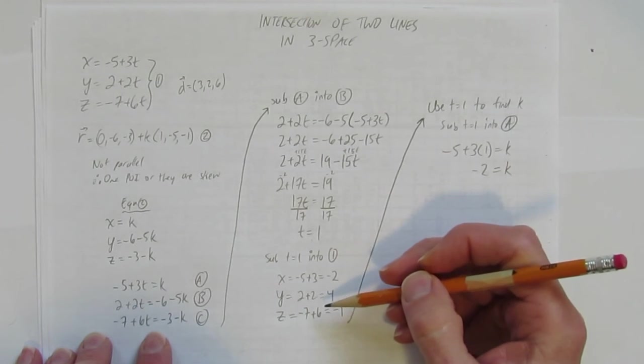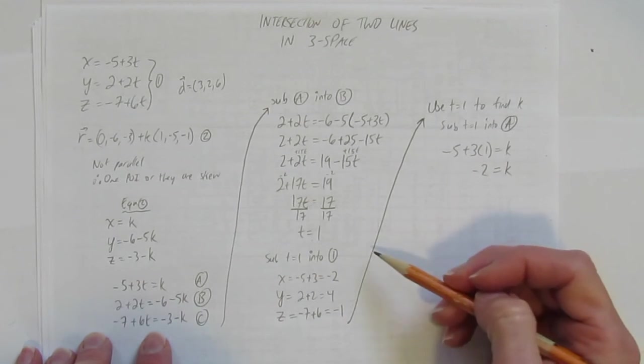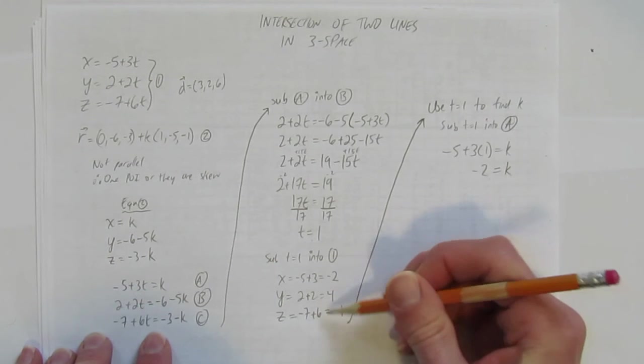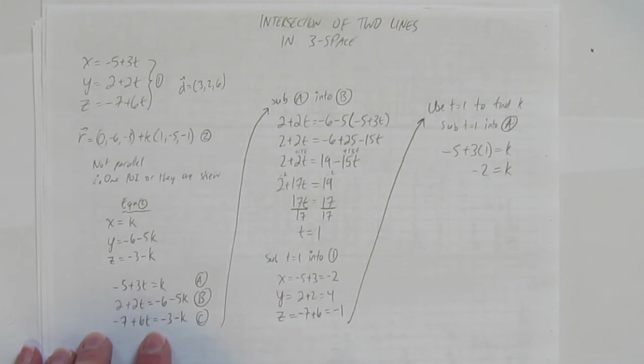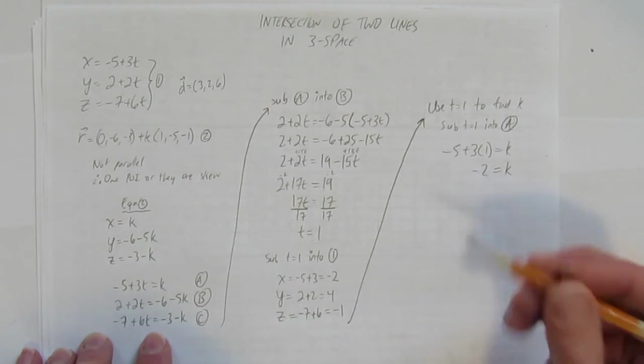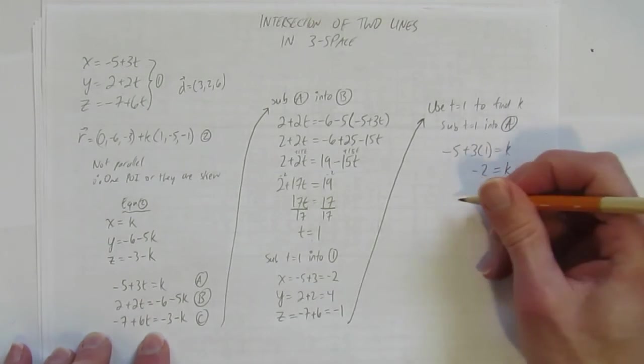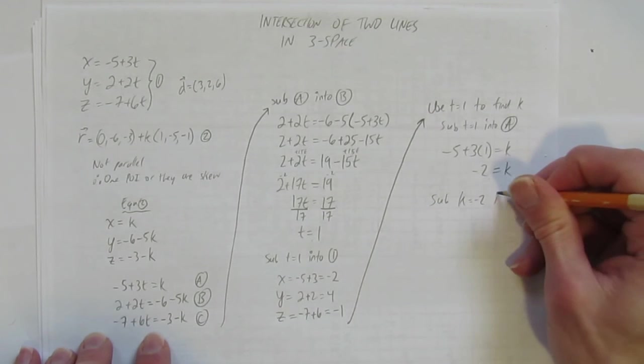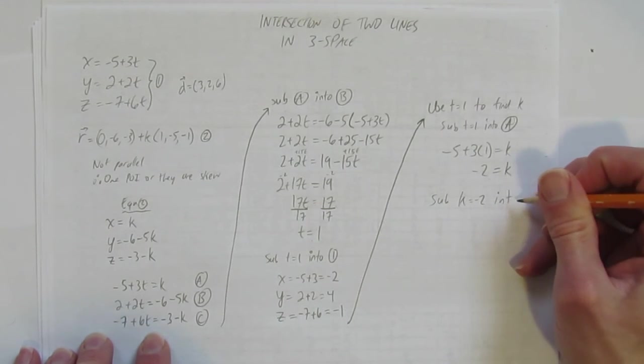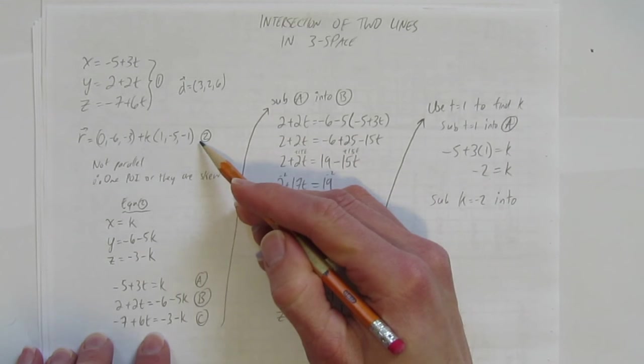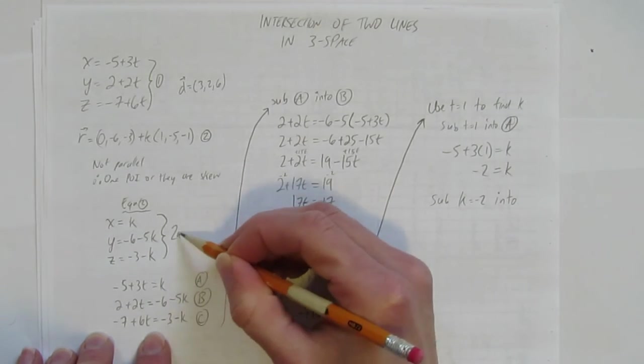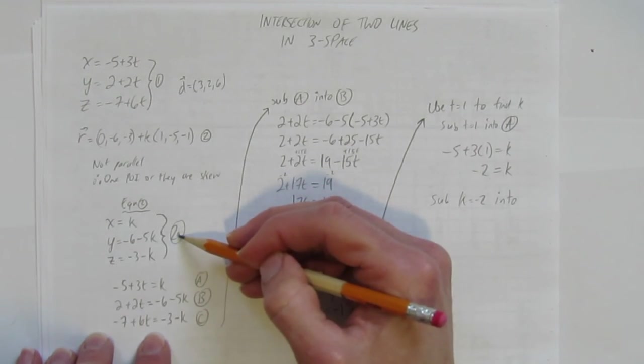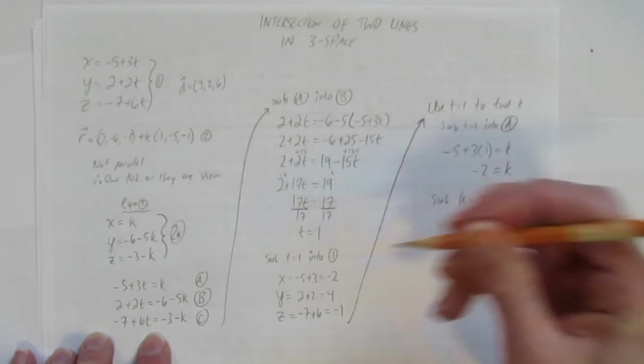t of 1 gives me this point. If there is a point of intersection, this k better give me the same point that this t gave me: negative 2, 4, negative 1. If it doesn't, they're skewed. The lines never touch. If it gives me the same point, that's where they meet. So let's check. So I'm going to sub k equals negative 2 into, and I can sub it into this equation 2 or this equation 2. Let's tell them apart. I'm going to call this equation 2a. Just to clarify, it's still equation 2, but I adjusted it. It's 2a. I'm going to sub it into there. I'm going to solve for its x, y, and z value.